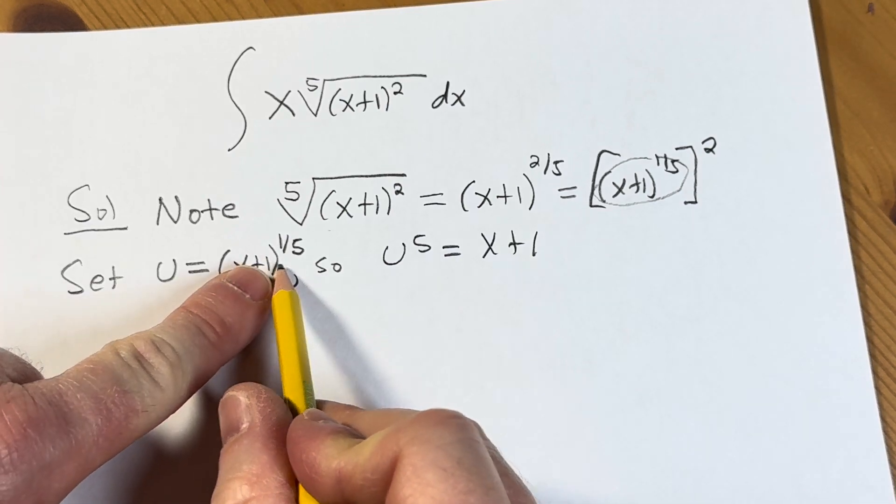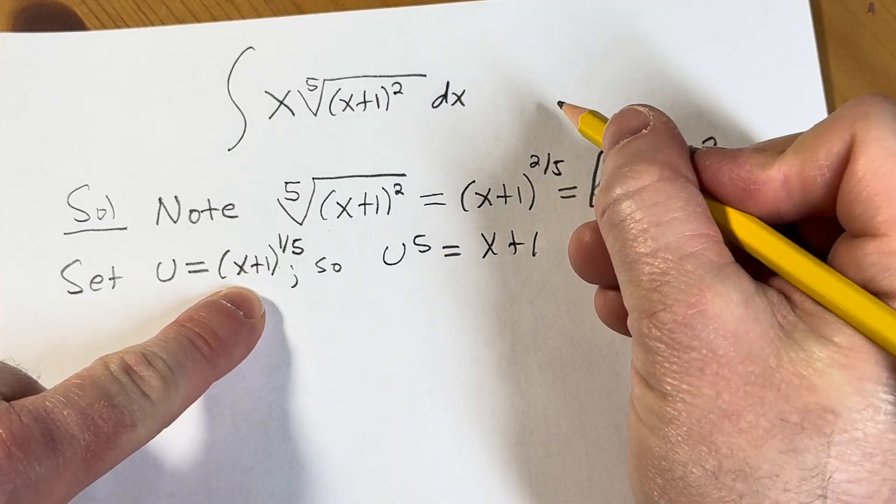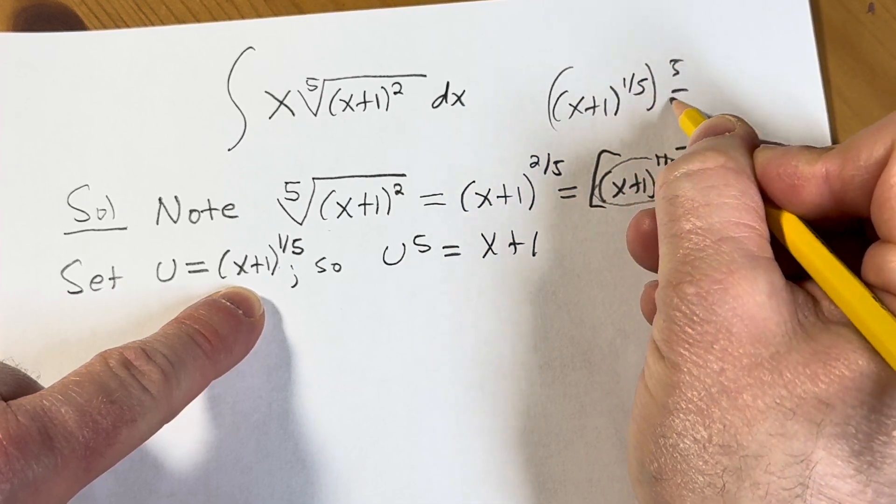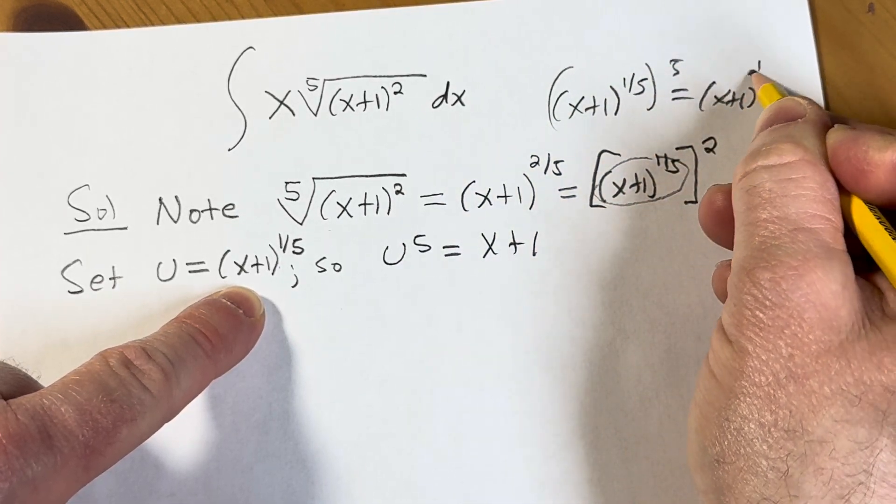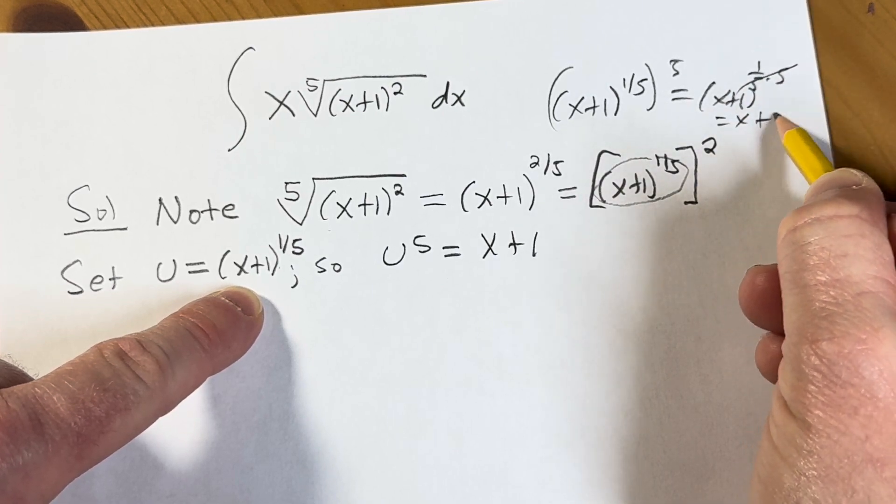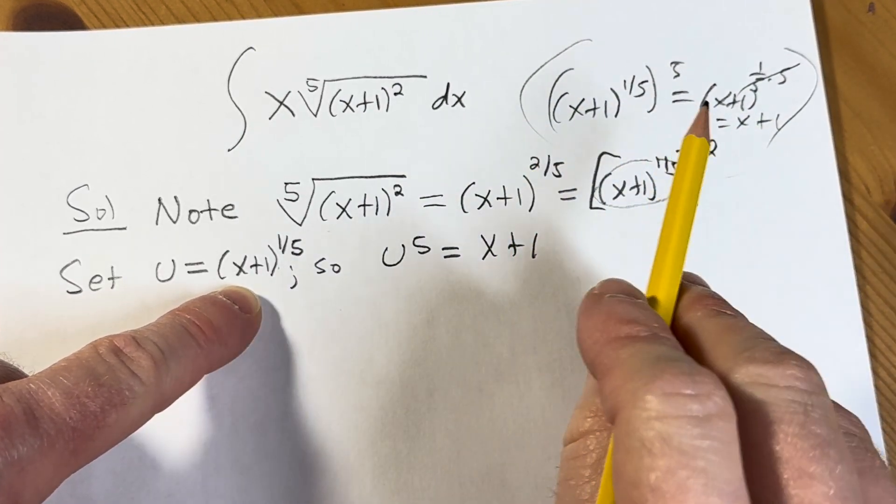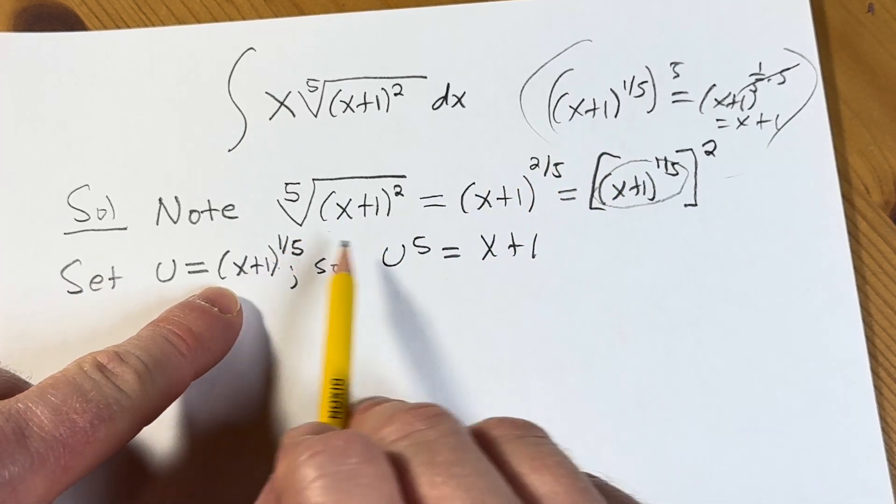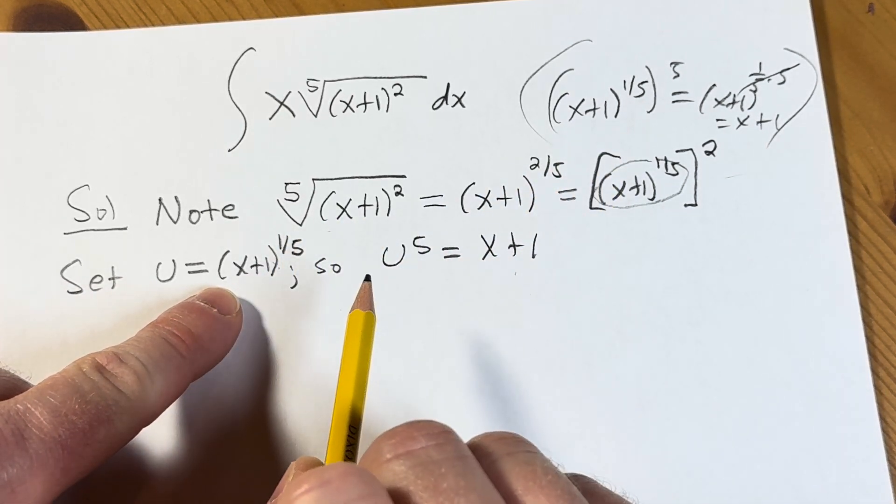Because when you take x plus 1 to the 1 fifth and you raise it to the 5th power, what happens? You get x plus 1, 1 fifth times 5. That's the properties of exponents. And that's just 1, so you just get x plus 1. So that's how we got x plus 1, raising this whole thing to the 5th power and using properties of exponents.